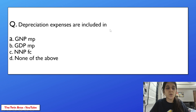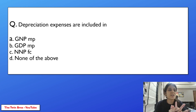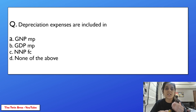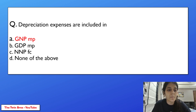Depreciation expenses are included in GNP at MP, GDP at MP, NNP at FC, or none of the above? Depreciation is what happens when capital goods experience wear and tear — for example, a car used for 5 years loses asset value naturally. The cost of depreciation is included in gross national product at market price, i.e., GNP at MP.